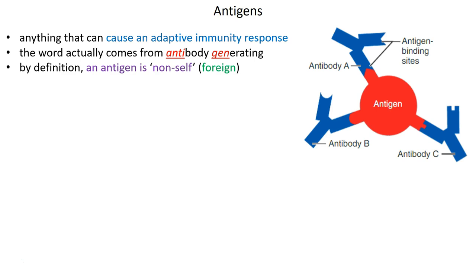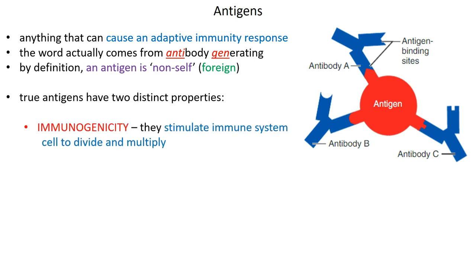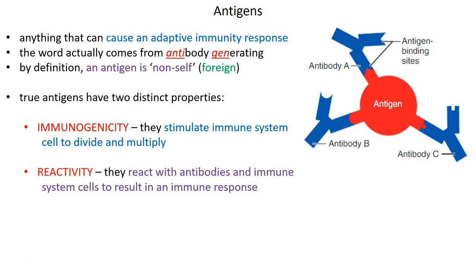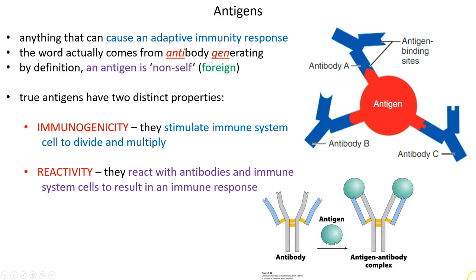By definition, immune-response-causing antigens are non-self — they do not come from our own bodies, they are foreign. They have two distinct properties: first, they're immunogenic, meaning they can stimulate an immune system response and cause immune cells to divide and multiply rapidly. Second, antigens are reactive — they react with antibodies and immune system cells directly to result in an immune response. All of this is because of antigen-antibody binding specificity.